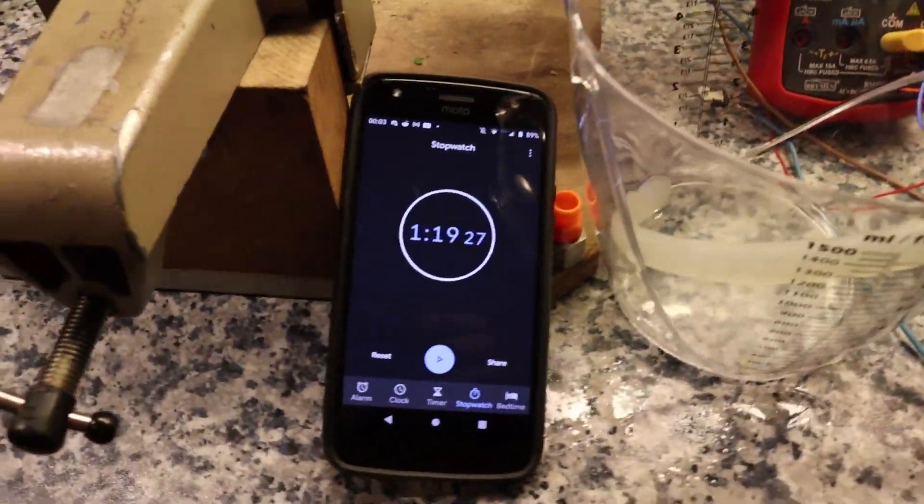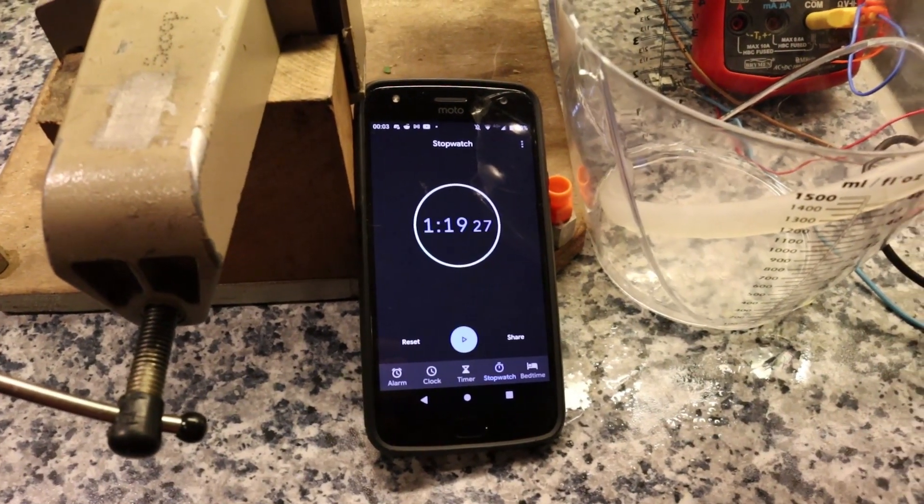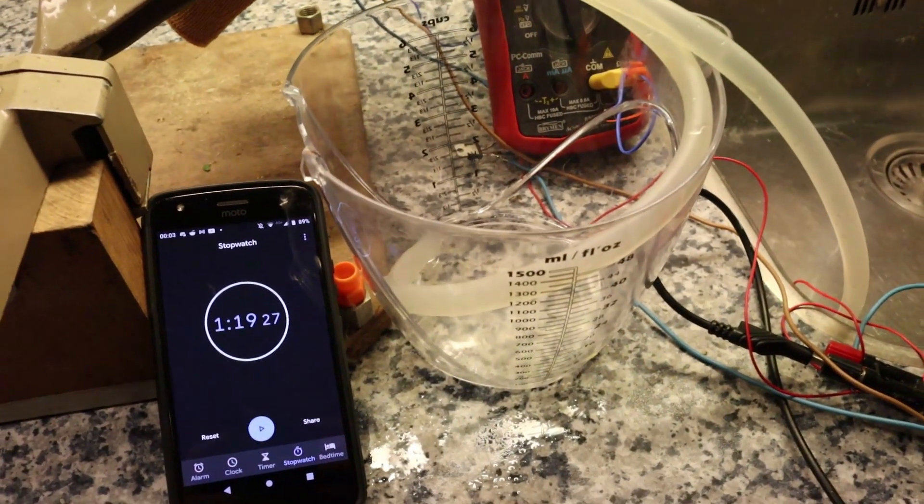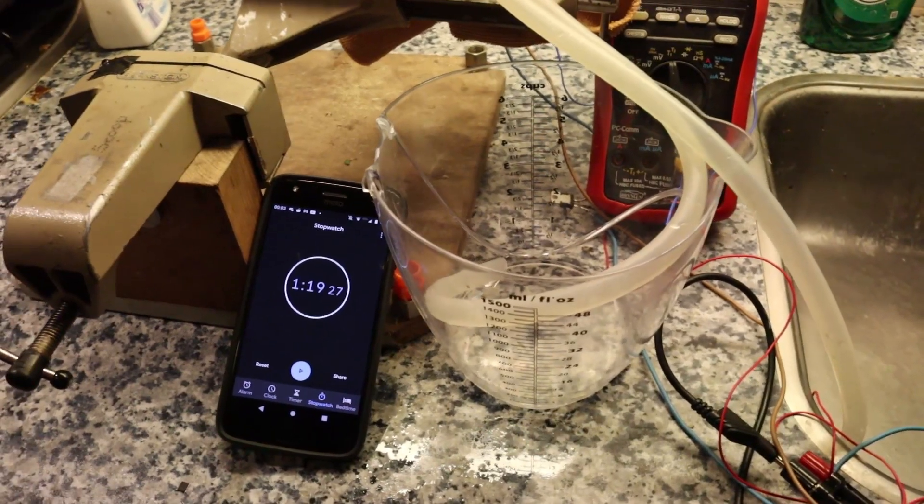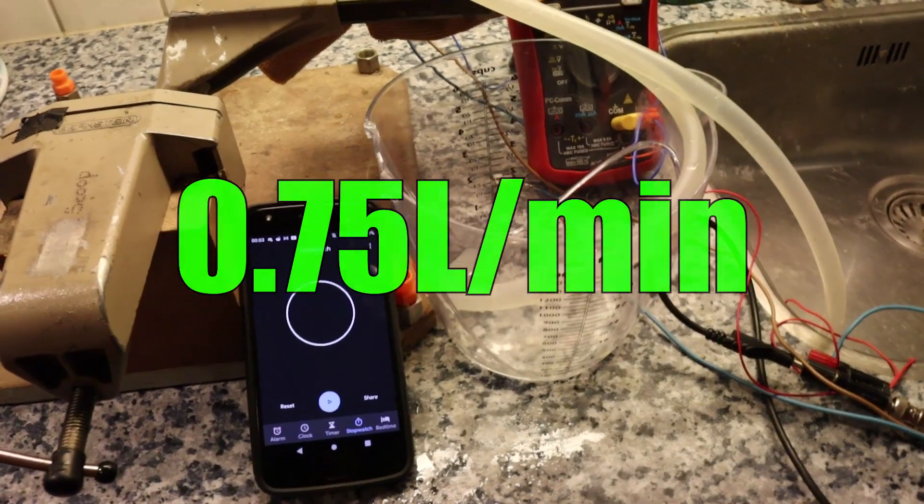This is approximately 1 minute 20 seconds for the liter of water. I will show you on screen how much liter per minute that is. Now we'll go to 100% duty cycle and see how fast this pump can empty this 1 liter of water.